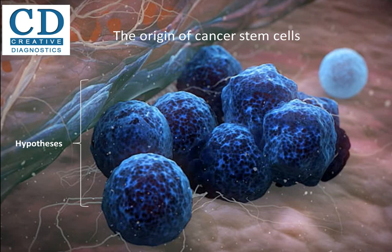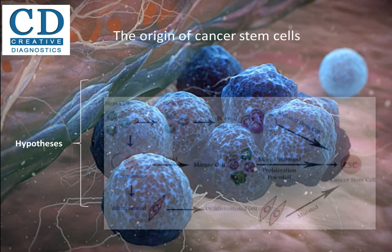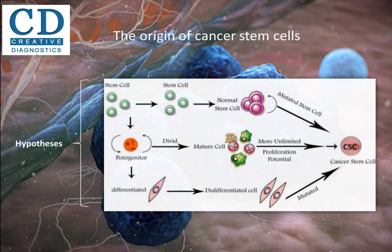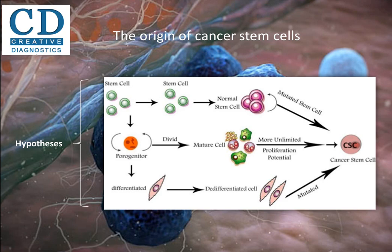So what do cancer stem cells come from? For this problem, scientists have made some hypotheses. Origin hypotheses include mutants in developing stem or progenitor cells, mutants in adult stem cells or adult progenitor cells, and mutant differentiated cells that acquire stem-like attributes.